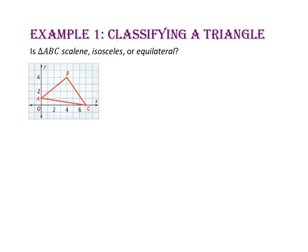In example 1, we will classify a triangle. Is triangle ABC scalene, isosceles, or equilateral? Remember, scalene means that none of the sides are congruent, isosceles means that two of the sides are congruent, and equilateral means that all three sides are congruent. Let's begin by finding the coordinates of each point. Point A is at (0, 1), point B is at (4, 4), and point C is at (7, 0). Since we need to determine the length of each side to classify this triangle, let's start with the distance formula.